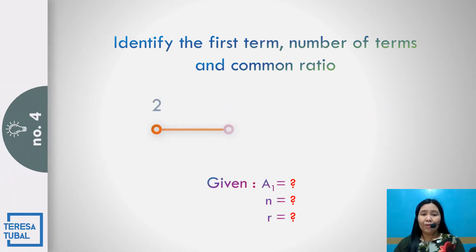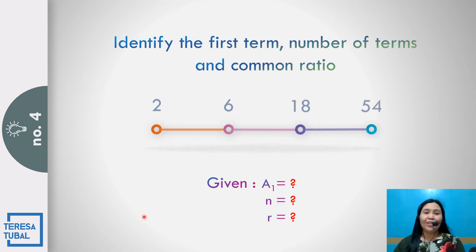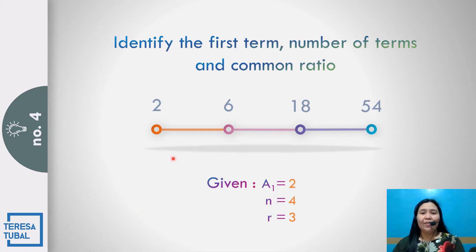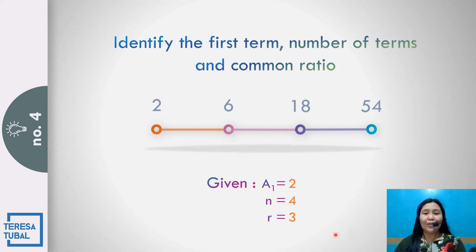Question number four: Find the first term, the number of terms, and the common ratio in the given geometric sequence 2, 6, 18, and 54. Yes! The first term is 2. The number of terms is 4. And the common ratio is equal to 3. Why? 6 divided by 2 is 3.